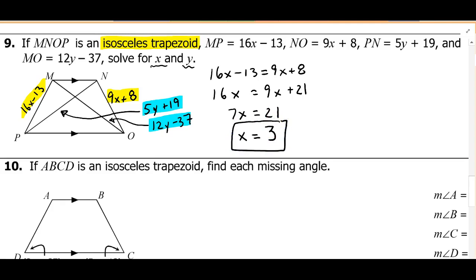All right, let's go through the same process with the diagonals. Because since it's an isosceles trapezoid, I also know the diagonals are congruent. So I have 12y minus 37 is equal to 5y plus 19. I'm going to add 37 to both sides. So 12y is equal to 5y plus 56. And then I'll subtract 5y from both sides. So I get that 7y is equal to 56. And y is equal to 8.